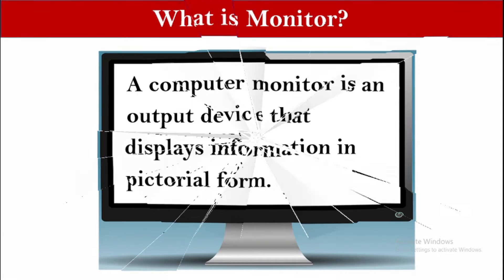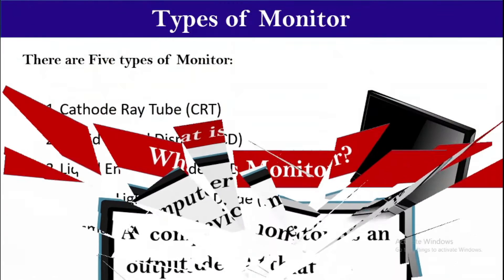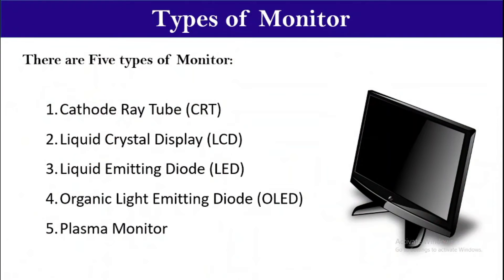If we talk about types of monitors, there are five types. You will find three types on many websites, but the total types are five. So let's talk about them. Number one is cathode ray tube, which we call CRT.